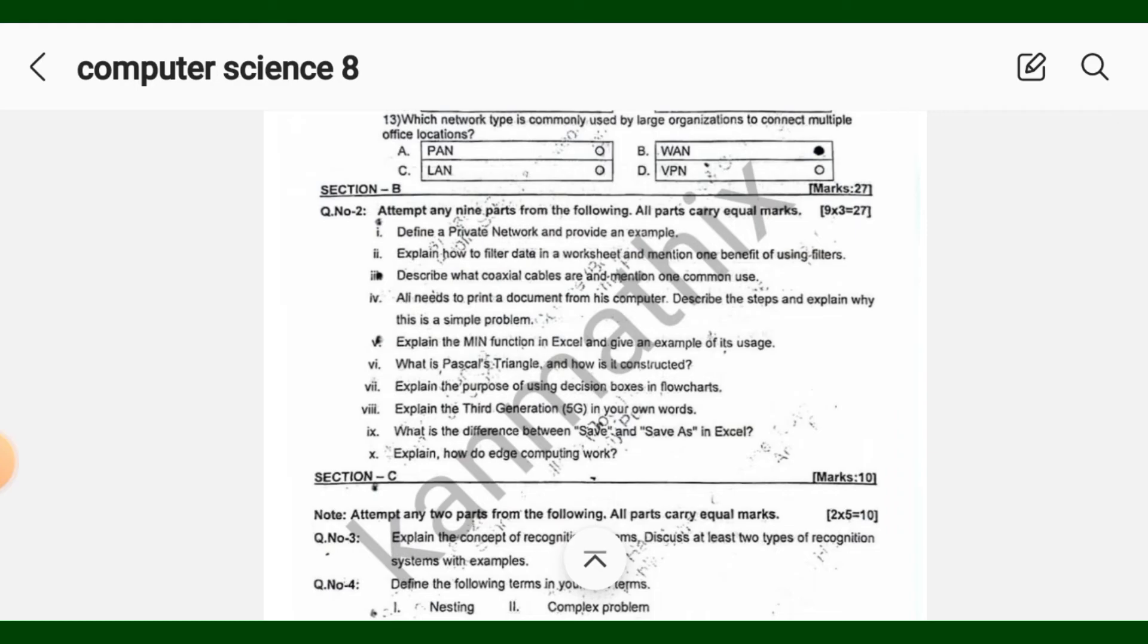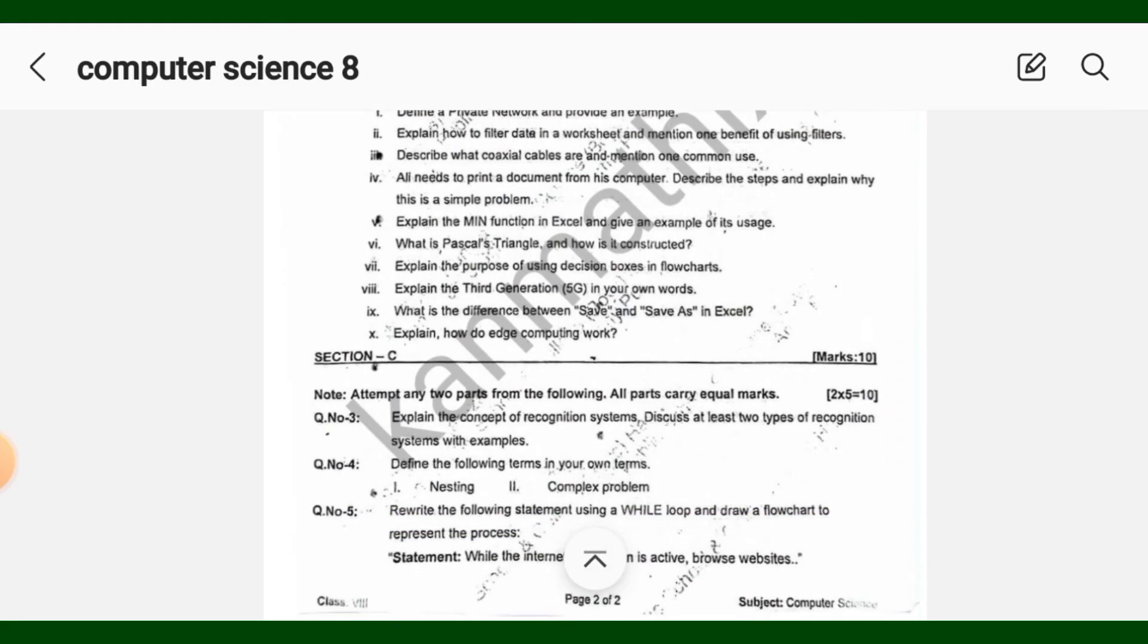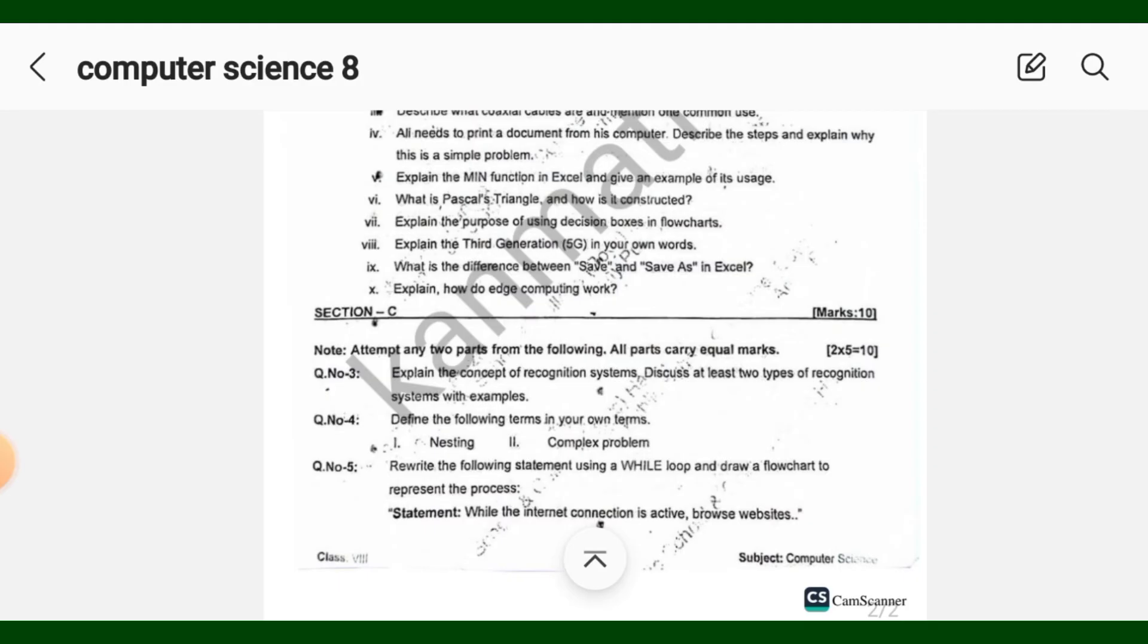So total 10 parts were given and you had to attempt 9. Section C was 10 marks. You had 2 parts to attempt, each part carries 5 marks. So it was your paper.